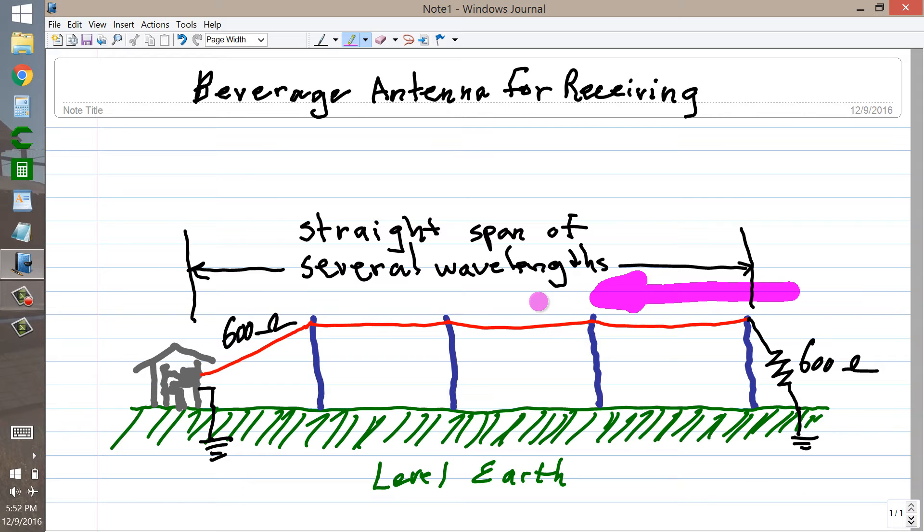If you connect a beverage antenna up with a resistor like that, then it will only receive well in directions coming from the far side of your station rather than bi-directional.